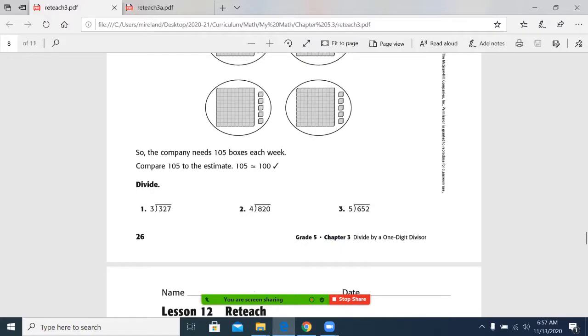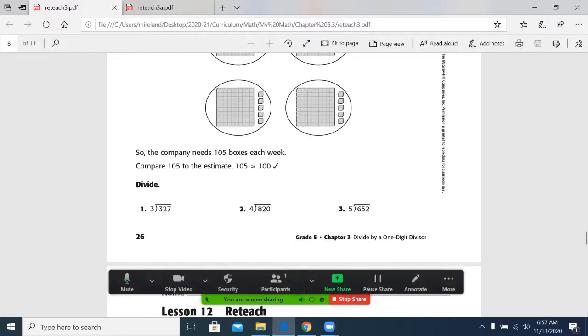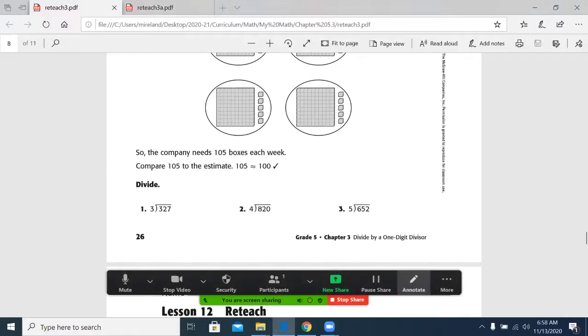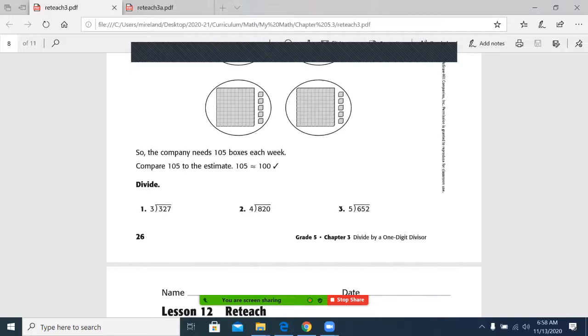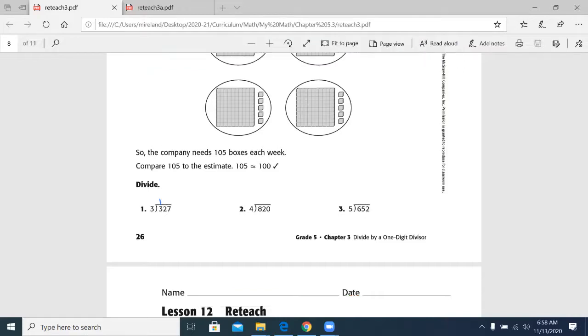So let's divide 327 divided by 3. Let's do this one together. I want you to write this in as we go. 3 into 3, we'll put it right here. How many times does 3 go into 3? One time. 3 times 1 is 3. I subtract 3 minus 3 is 0. I bring down the 2 because 0 is less than 3. Will 3 go into 2?